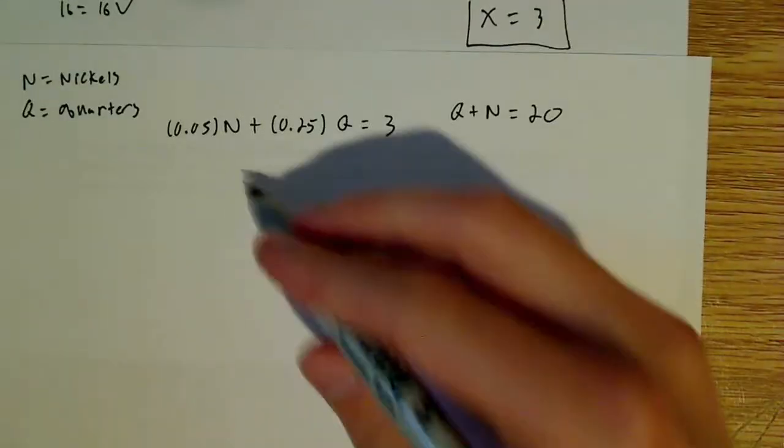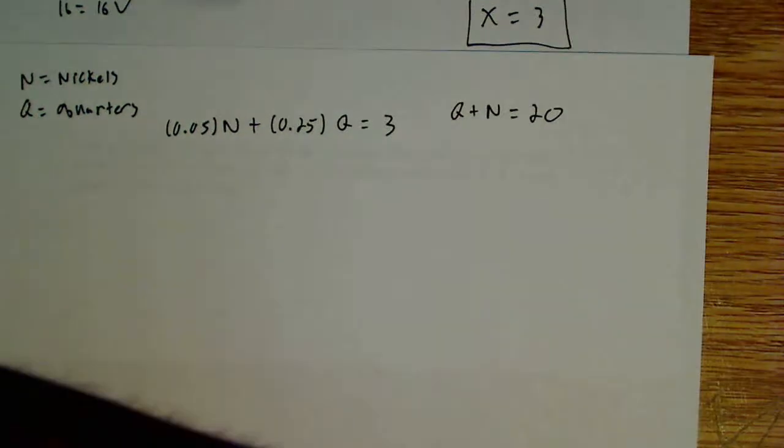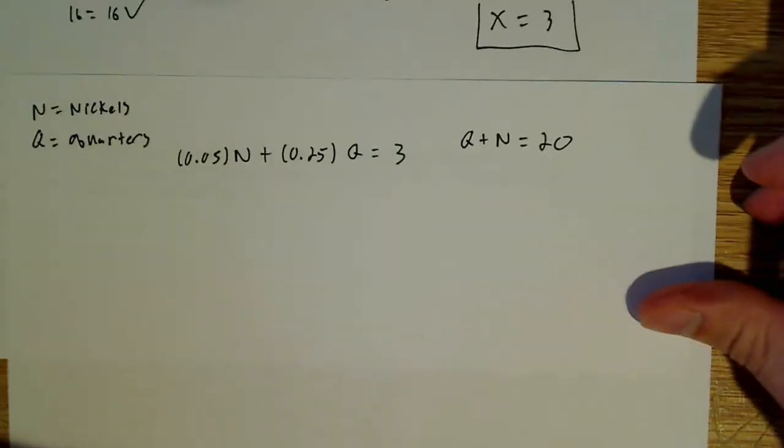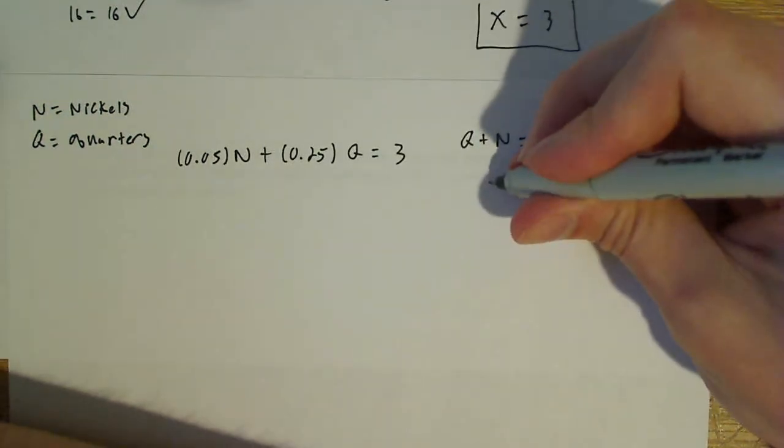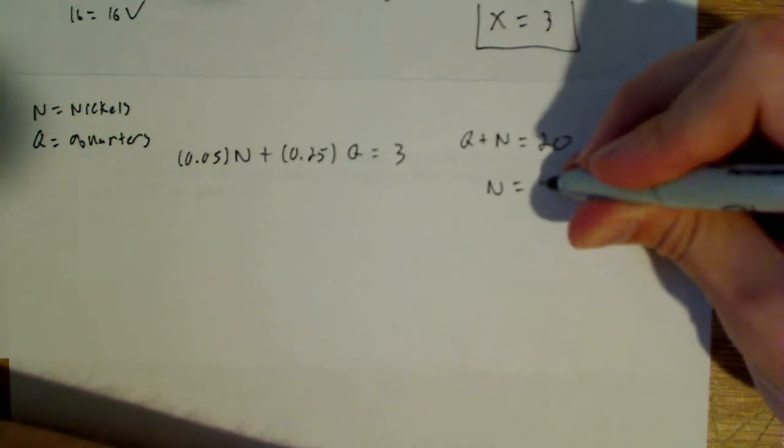Now what I want to do is I want to solve for one of these over here and I want to plug it in over here because I got two equations, two unknowns. I want to find out what both of these things are. So basically what I'm going to solve for here is n and I'm going to say n is equal to 20 minus q and I'm going to plug that in now for n.